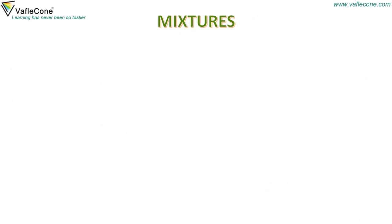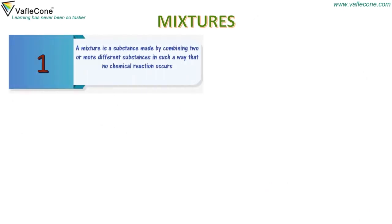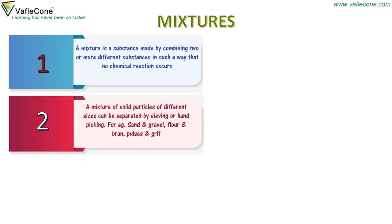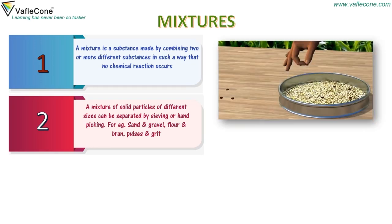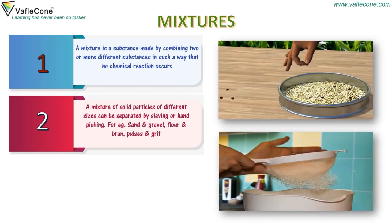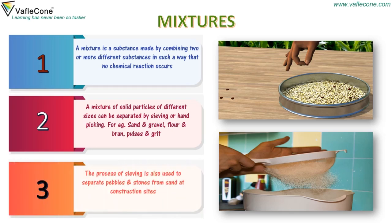Mixtures. A mixture is a substance made by combining two or more different substances in such a way that no chemical reaction occurs. A mixture of solid particles of different sizes can be separated by sieving or hand picking. For example, sand and gravel, flour and bran, pulses and grit. The process of sieving is also used to separate pebbles and stones from sand at construction sites.